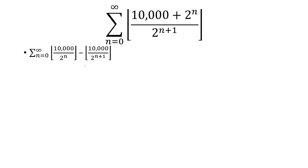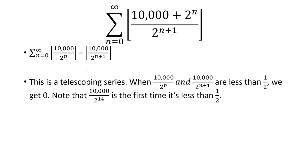So now I want to find the sum of this. But notice that this is a telescoping series. And the reason I know this is everything is the same except the n and the n plus 1. So think of this as the first term is one step behind the 10,000 over 2 to the n plus 1 term.